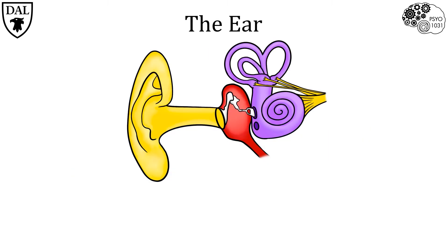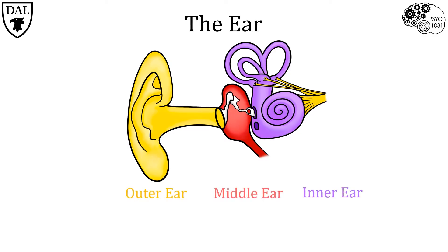The ear serves as the sensing and transducing organ of hearing. Let's begin by looking at the general organization of the ear. The ear consists of three anatomically and functionally distinct divisions: the outer ear, the middle ear, and the inner ear.